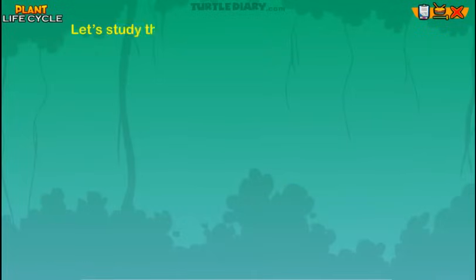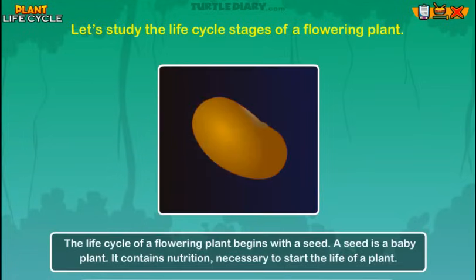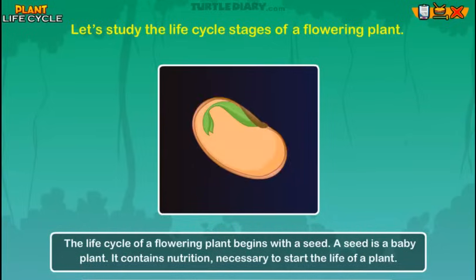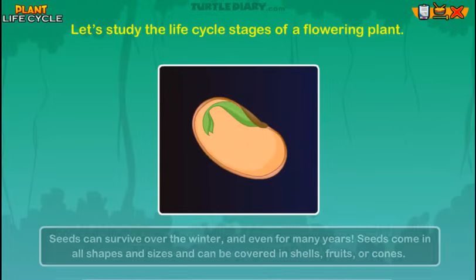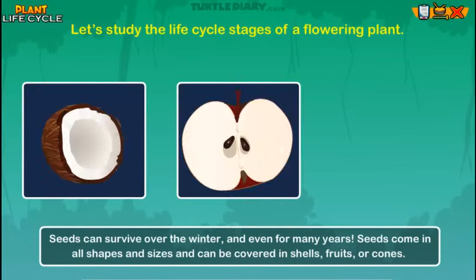Let's study the life cycle stages of a flowering plant. The life cycle of a flowering plant begins with a seed. A seed is a baby plant — it contains nutrition necessary to start the life of a plant. Seeds can survive over the winter and even for many years. Seeds come in all shapes and sizes and can be covered in shells, fruits, or cones.